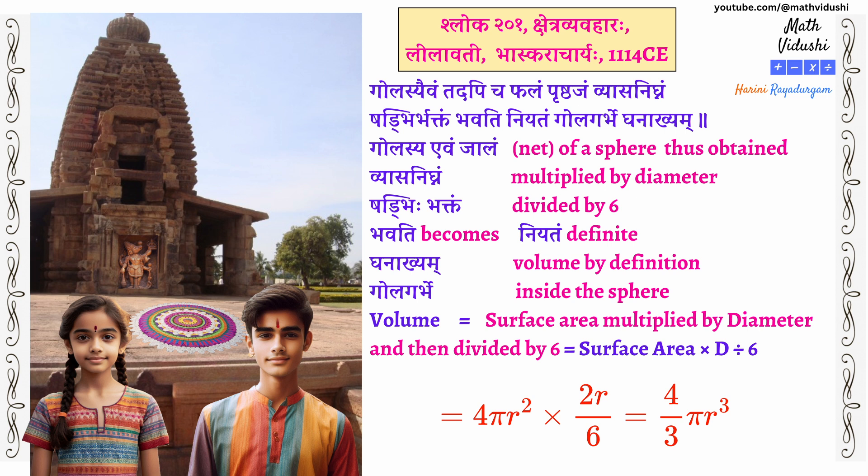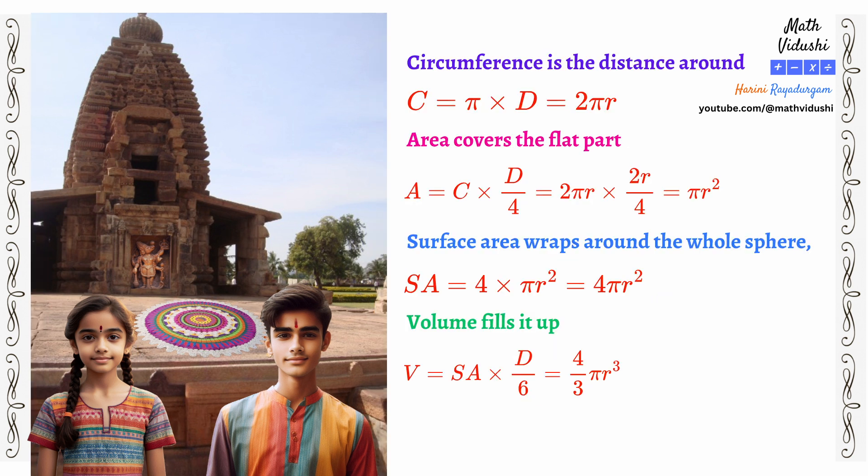The radius is cubed because it's filling up space inside — it measures the amount of air inside a solid object. The radius is cubed because we are in 3D now. Pretty cool! Then the circumference is the distance around. Area covers the flat part. Surface area wraps around the whole sphere and volume fills it up. I understood everything. Can we now learn the sloka in the Mandakranta Chanda meter?